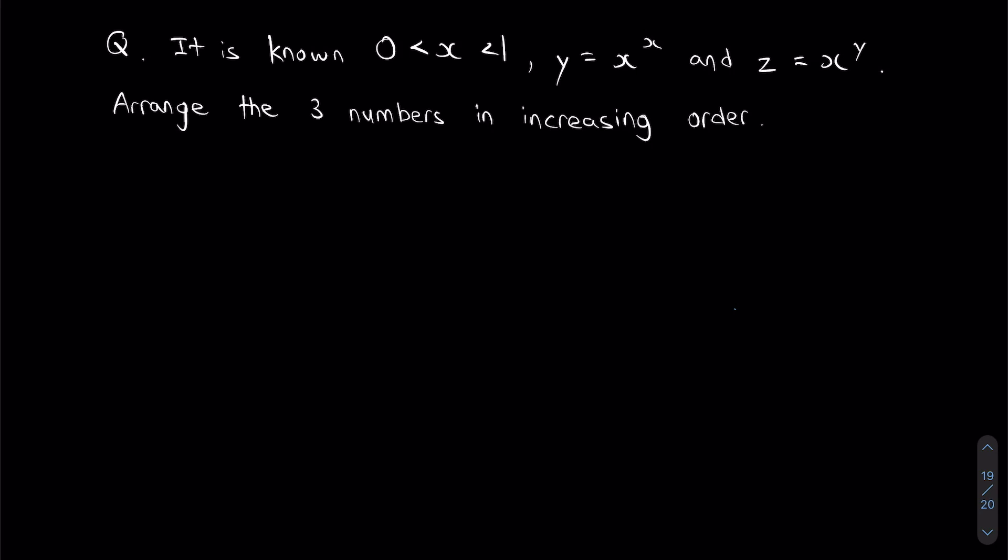The question says, it is known that there is an unknown number x, and x is between 0 and 1. y is another unknown number, y is going to be equal to x to the power of x, and finally, one last unknown number, z is going to be equal to x to the power of y. The question then asks you to arrange these three numbers in increasing order.